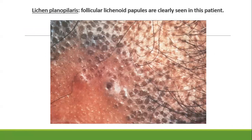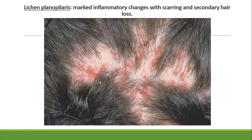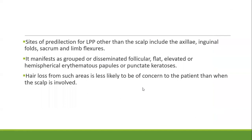In early lesions of lichen planopilaris there is follicular plugging with a typical violaceous color along with areas of alopecia. In the initial phases there is follicular plugging, later followed by scarring and hair loss with a dusky erythematous color. Sites of predilection other than the scalp include axilla, inguinal region, scrotum, and the flexors.